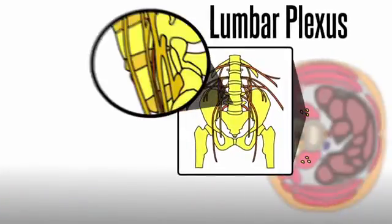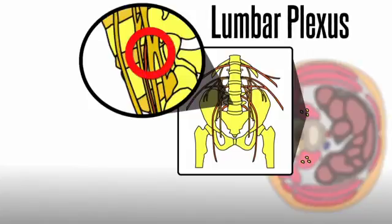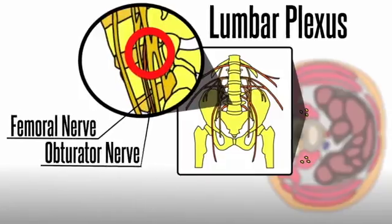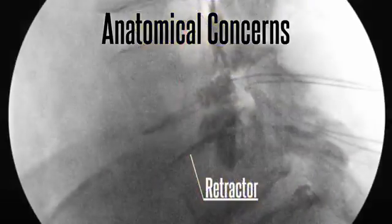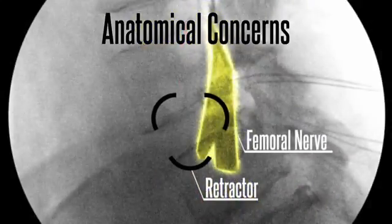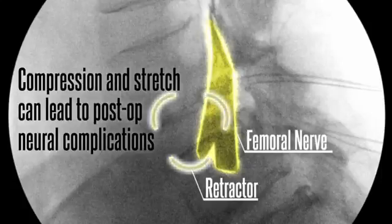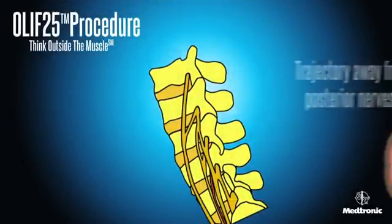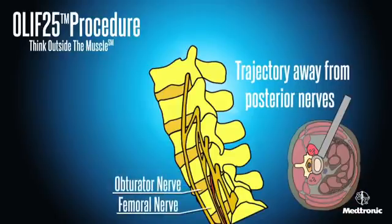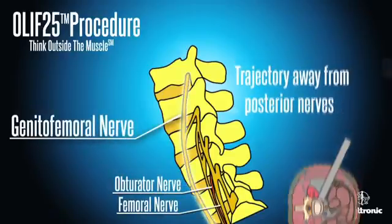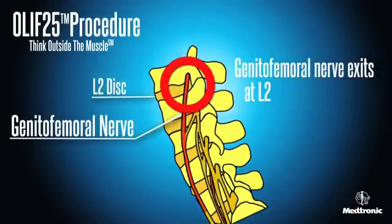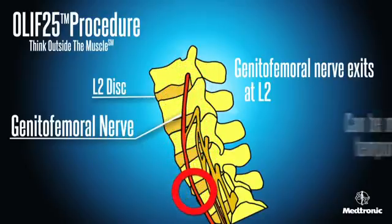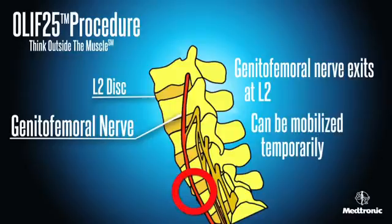The lumbar nervous plexus crosses the midpoint of the L4-5 disc space. Most often seen traversing the midpoint of the disc are the femoral nerve and the obturator nerve. Anatomical concerns include injury to these nerves, particularly via compression and stretch during opening of a trans-psoas retractor, which can lead to post-op neural complications. OLIF-2-5 has a trajectory away from posterior nerves, including the femoral nerve. The genitofemoral nerve exits the psoas muscle at approximately the L2 disc space and may be visualized during the OLIF-2-5 procedure; if visualized, it can be mobilized temporarily to allow for entry into the disc space.